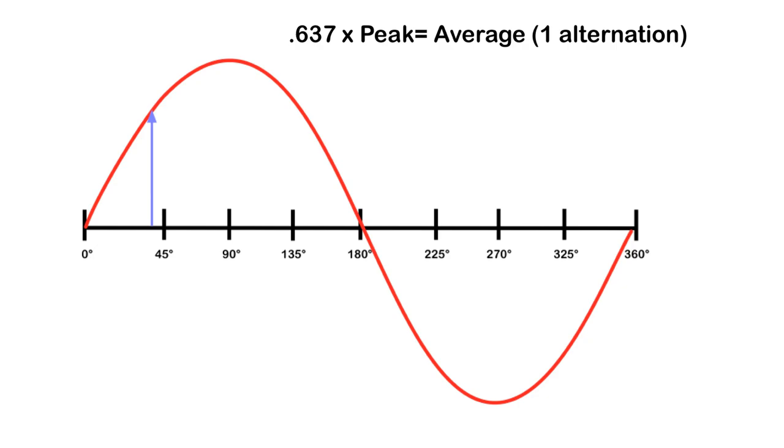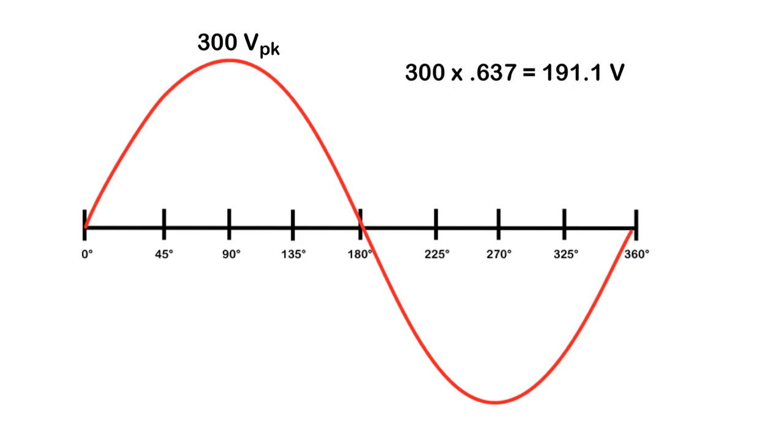That being said, however, we can calculate what the average value is for one alternation. And somebody smarter than you and I has calculated that if you took the average of this alternation, and you took the peak value, and you multiplied that by 0.637, or about 40 degrees into the cycle, you could work out what your average for one alternation was. Let's take a look at an example. Let's say I wanted to calculate what the average value is of this waveform if it had a peak voltage of 300 volts. I would take that peak value and go 300 times 0.637, and I would get my answer of 191.1 volts.